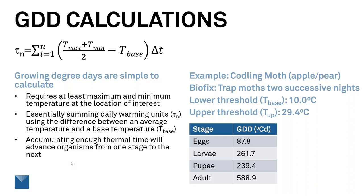When you accumulate enough thermal time, the organism is going to advance from one stage to another. We know this because many researchers have studied these organisms in the field over time and done a significant number of studies — they're all out there in the literature. While preparing for this talk, I was interested in coddling moth so I could tell my spray person when to come in and spray. Coddling moth, as I mentioned, is of interest in apples and pears. How do you know when to start adding up degree days? That's what we call a biofix.